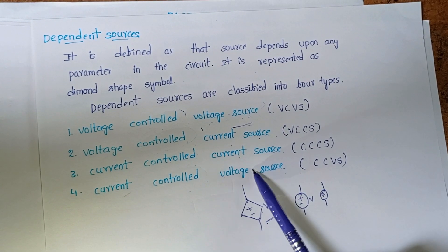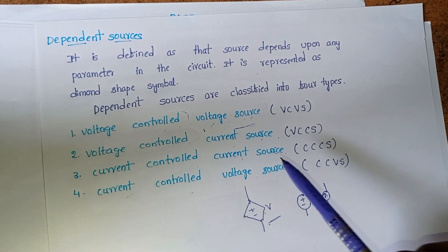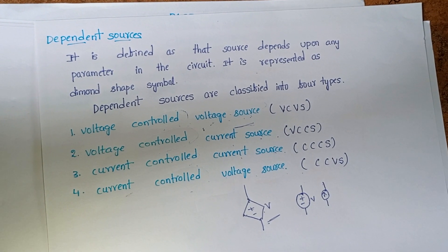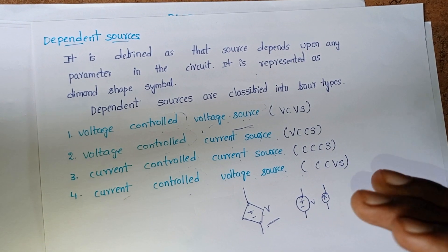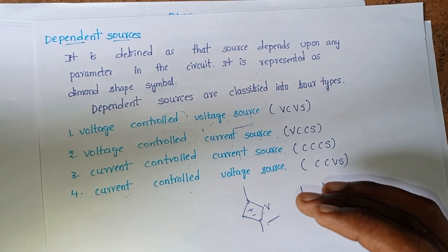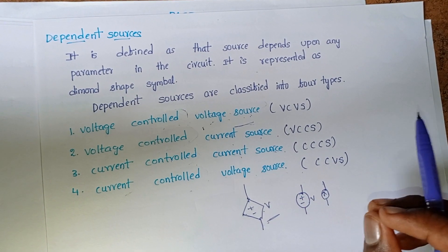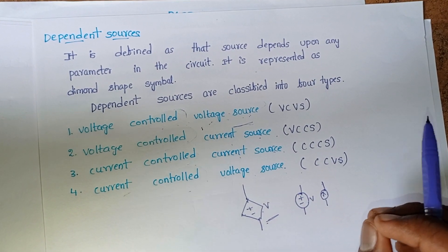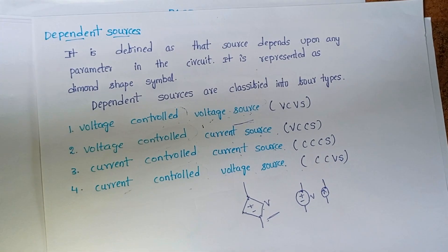This is about independent and dependent sources in electronic circuits. If you have any doubts, please comment in the comment box. Thank you.